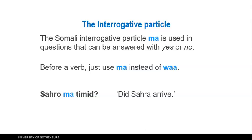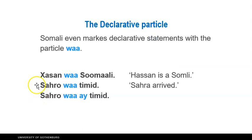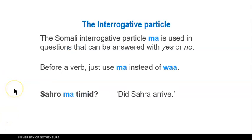There is a special interrogative particle — question particle — 'ma', which is used in questions that need to be answered with yes or no. This question particle 'ma' goes right before the verb, the predicate part of the sentence. So we take away the declarative 'wa' and replace it with the interrogative 'ma'. We then get 'Sahro ma timitay' — 'Did Sarah arrive?' — as compared to the statement 'Sahro wa timitay' — 'Sarah arrived'.